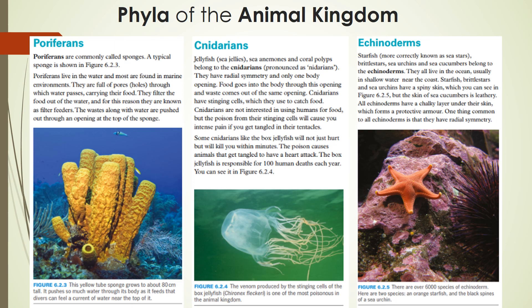First up, we have Porifera — these are sea sponges. They have a unique way of feeding where they suck in the water around them, filter out all the little bits of food within that water, and then spit it back out again, which is why they're called filter feeders. In the middle, we have Cnidarians, which include jellyfish, sea anemones, and coral polyps. Jellyfish rely on their stinging tentacles to catch prey. On the right, we have echinoderms — which literally means spiny skin — including sea stars, brittle stars, sea urchins, and sea cucumbers. All live in the ocean, and all have spiny skin except for sea cucumbers.